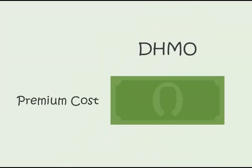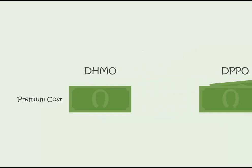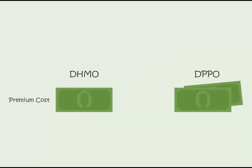One of the most basic differences between a DHMO and DPPO plan is premium cost. DHMO premiums are typically the least expensive of all the dental insurance plans, while the premiums for a dental PPO plan are more expensive.